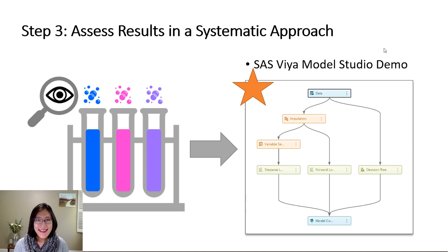All right, so in step one, we learned we need to ask many questions about our project and our task. In step two, we learned the pros and cons of different machine learning algorithms. Now is the time to do the match. You will still find many algorithms suitable for your project. So in this step three, we are assessing results in a systematic approach. I'm going to show you how to do that in a very cool tool called SAS Viya Model Studio.